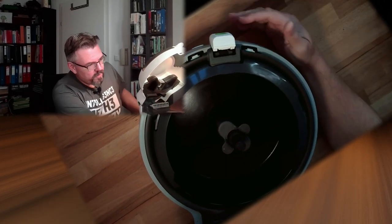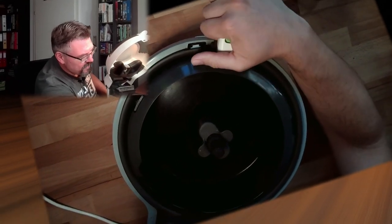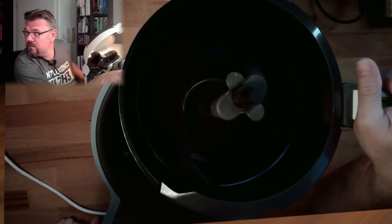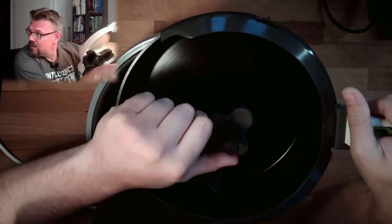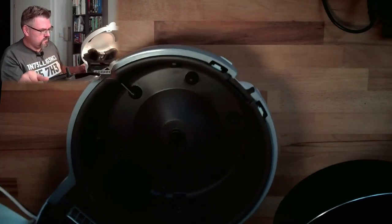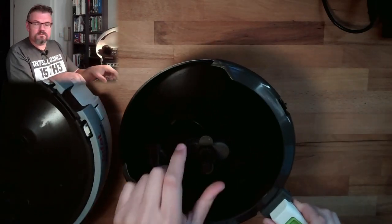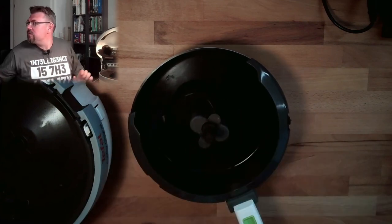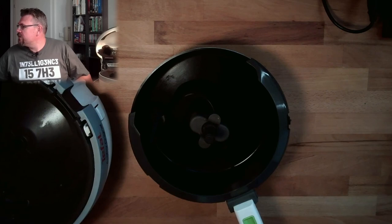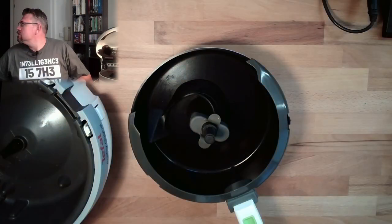This is a fryer, a fryer which is not working without a lot of oil. How should it work? You put in here, in this thing, you put in potatoes or whatever you want to fry. And this arm here is going to rotate.